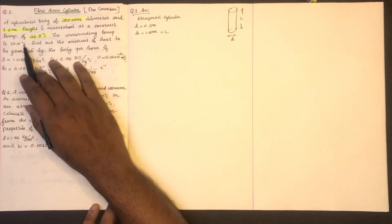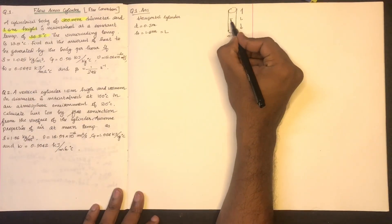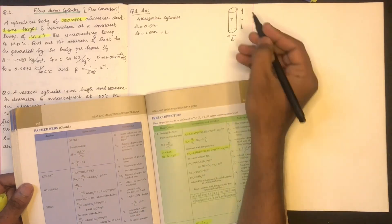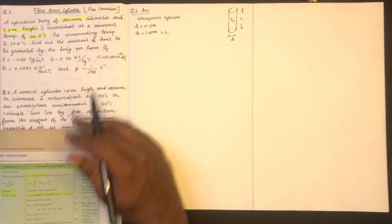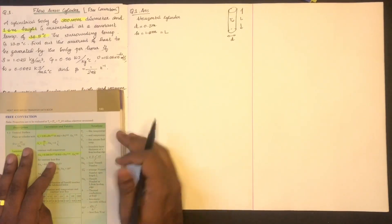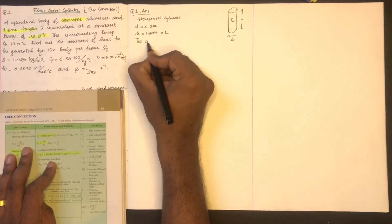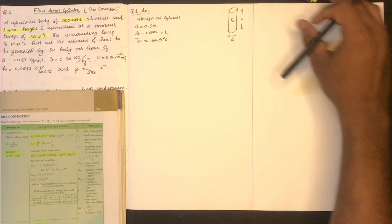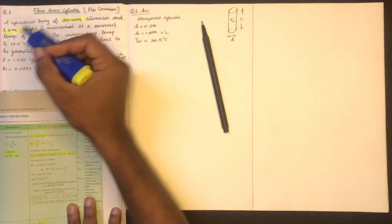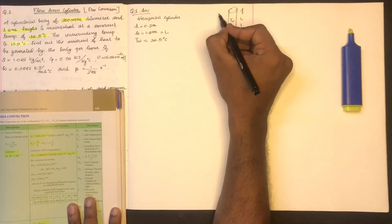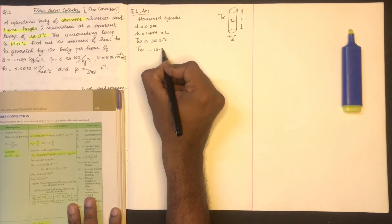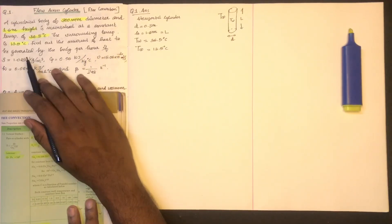The cylinder surface temperature Tw is equal to 36.5 degrees Celsius. The surrounding temperature T infinity is equal to 13.5 degrees Celsius. We need to find the amount of heat generated by the body per hour.